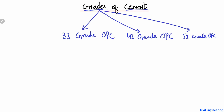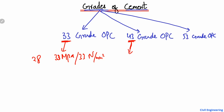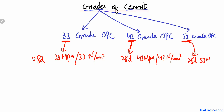The grades are named according to their compressive strength in megapascals. So 33 grade means a compressive strength of 33 MPa, or 33 Newton per square millimeter, after 28 days. Similarly, 43 grade means 43 MPa after 28 days, and 53 grade means 53 MPa after 28 days.